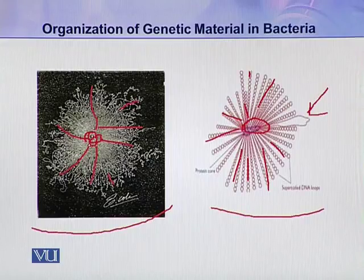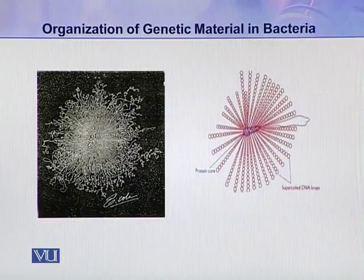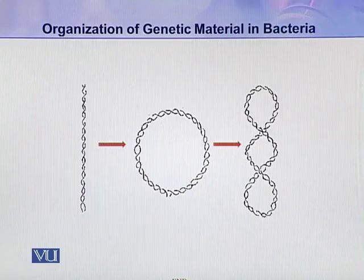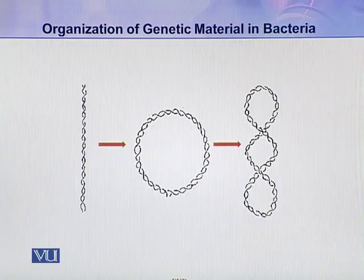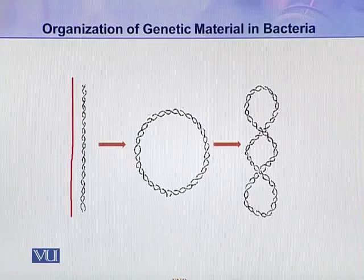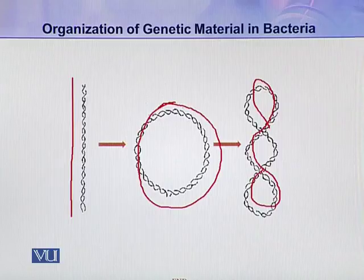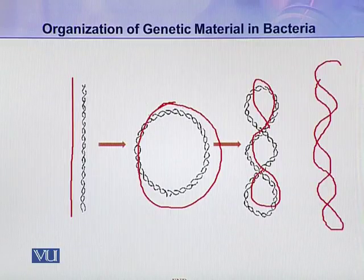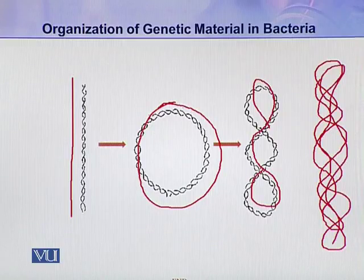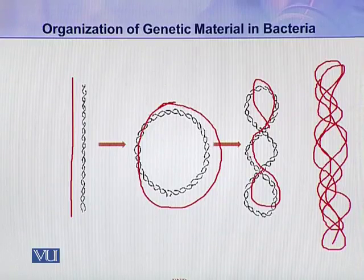Sometimes a supercoiled loop is nicked by DNase and it becomes relaxed. As for how supercoiled loops are formed: the DNA molecule in bacteria is actually linear, then it becomes circular — since a circular DNA molecule is present in bacteria — and then this circular DNA supercoils. If supercoiling continues, it becomes highly condensed. In this way, the DNA molecules are highly condensed in the chromatin.